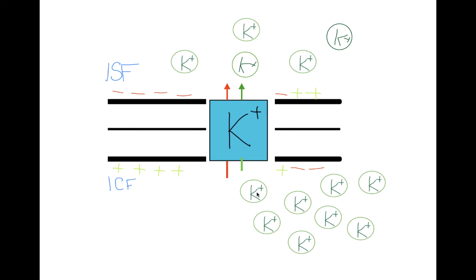As we allow this potassium channel to remain open, the two gradients will actually start to decrease. The concentration gradient will tend to decrease because more potassium flows through. The second thing that will decrease is the positive charge inside the cell. As we move positive charges from the inside to the outside, we are basically building negative charges on the inside of the cell. So these two gradients are decreasing and the movement of potassium from inside to outside will be slowing.